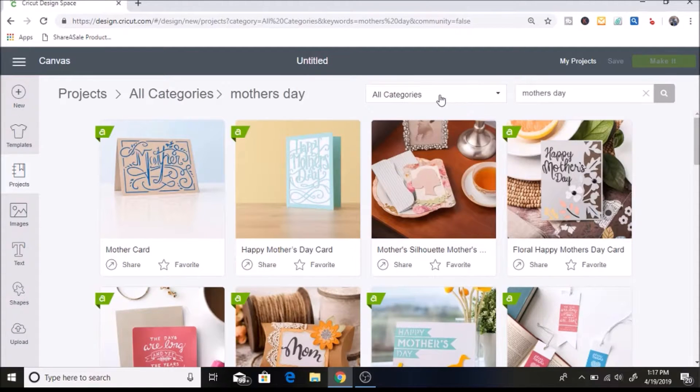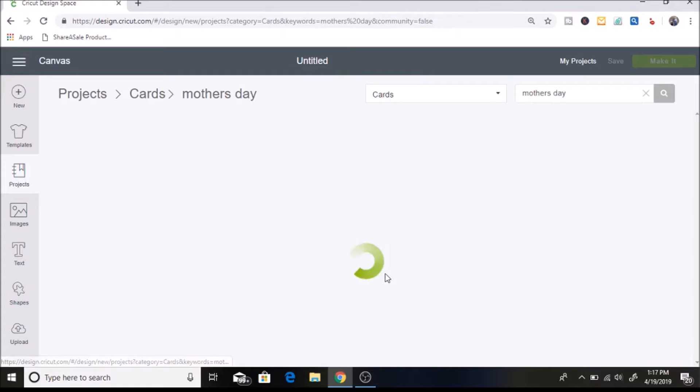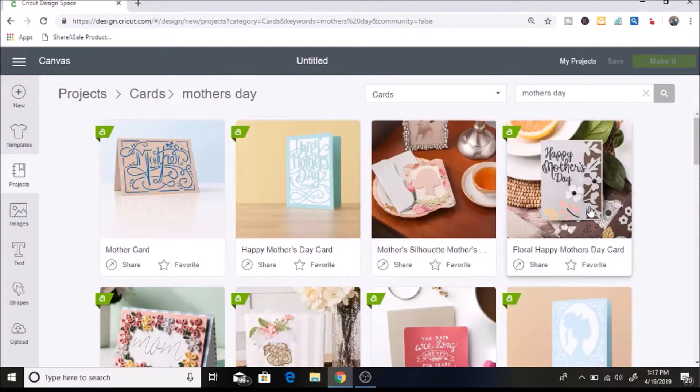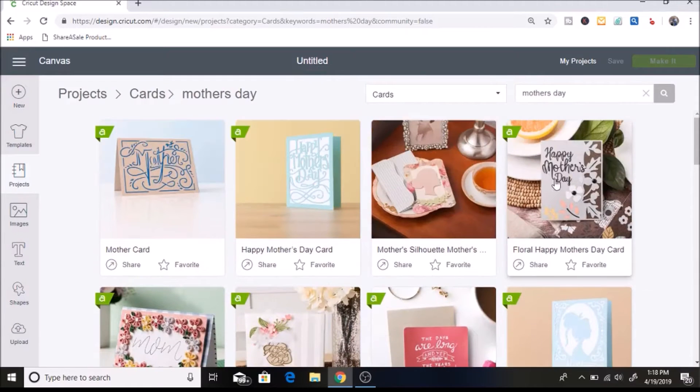So I'm going to search for Mother's Day. I'm also going to click on all categories and you can narrow it down. So I am going to click on cards. Then you can see here's all of the cards that come up that you can make and if it has the little green sign here with the A, that is Cricut Access.